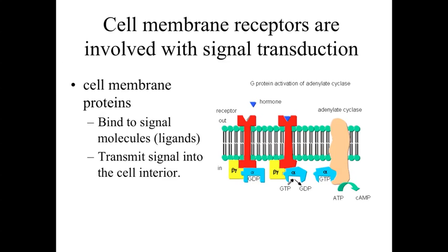The cell membrane is also going to have receptors involved with signal transduction. In this example, we have a hormone — a little blue triangle — binding to the receptor. When it does so, it causes the signal to be transferred to the inside of the cell by activating a cyclic AMP system. So we can transmit a signal to the interior and either turn things off, turn them down, or turn them up — basically controlling what's going on within the cell.